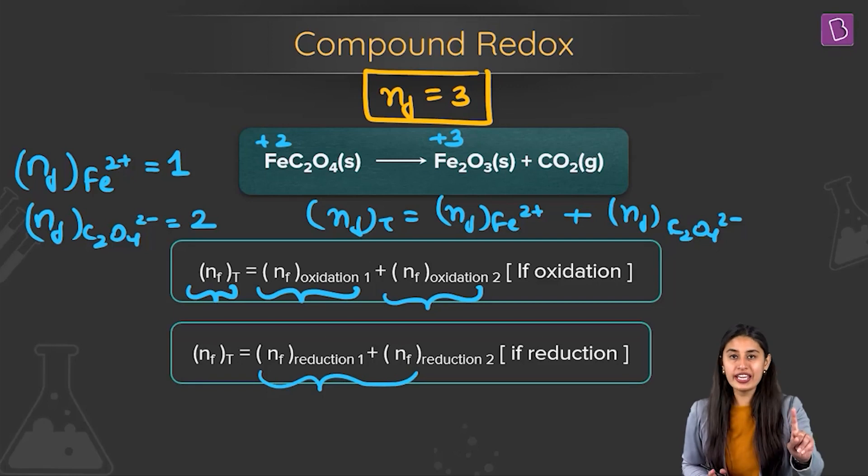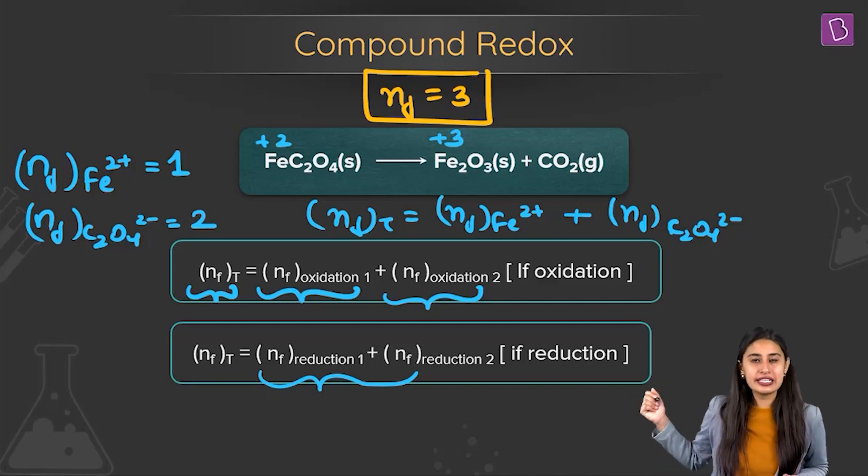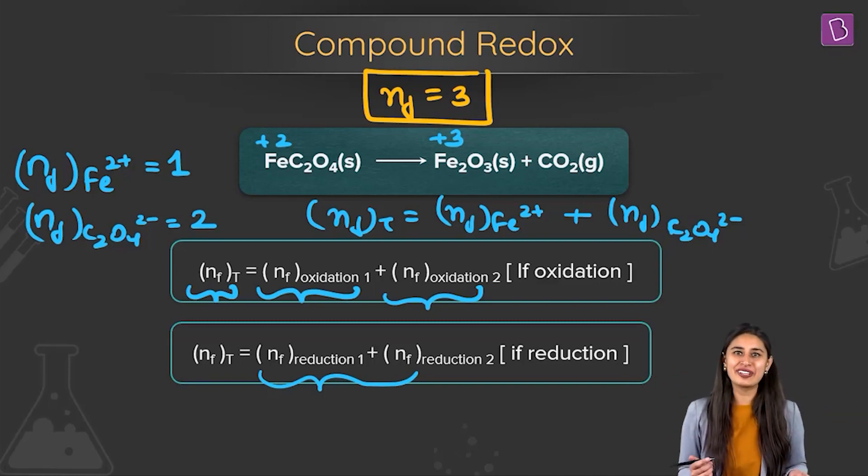First thing is, you knowing that here what kind of a redox is involved, compound redox is involved and then finding out the n-factor for these kind of redox, you simply have to add the n-factors. Very commonly asked in neat examination, if the edge has to be given, a twist has to be given, right? If psyche has to be tested, then this is a wonderful question.